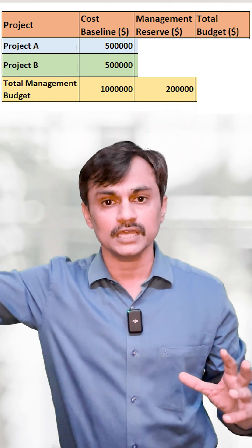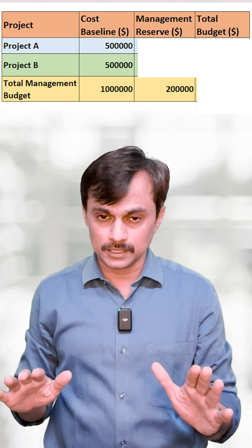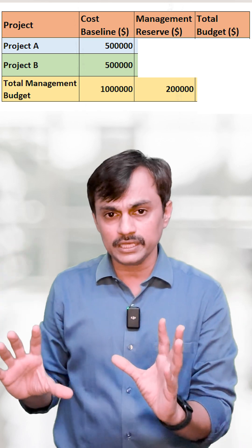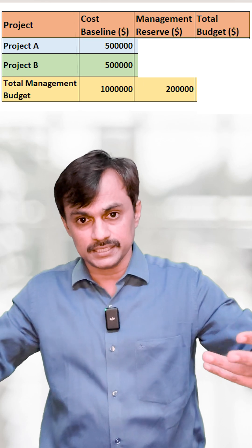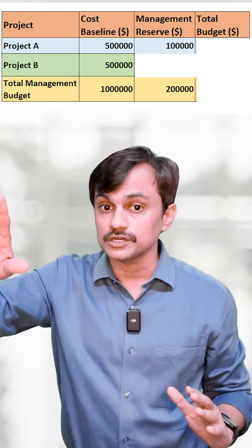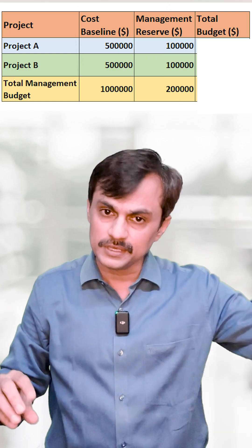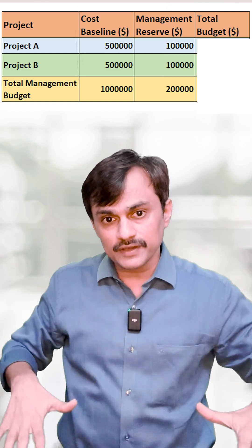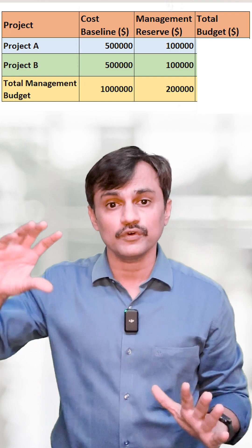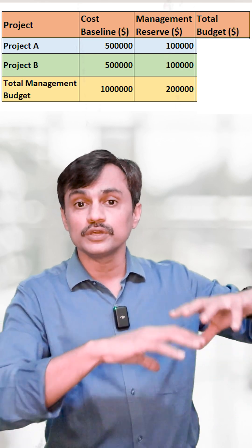Some third project comes and says 'give me that $200,000.' My management says: these two projects say they need $500K each only, but looking at my assessment of uncertainty, I want to keep on top of their cost baseline $100,000 reserve for Project A and another $100,000 reserve for Project B. So I don't want to invest the remaining $200,000 anywhere — I'm putting $100,000 as management reserve for each project.